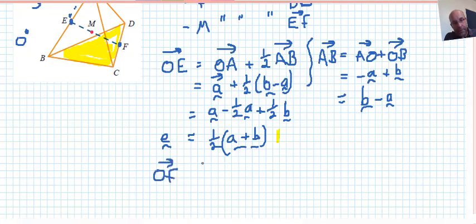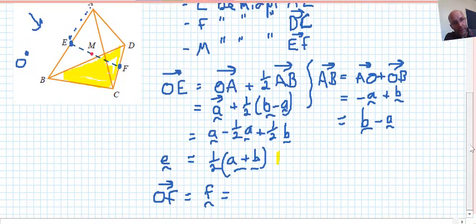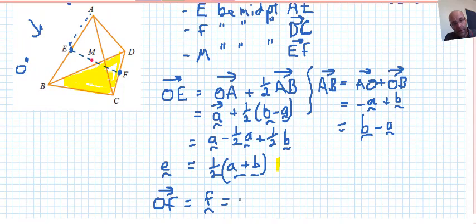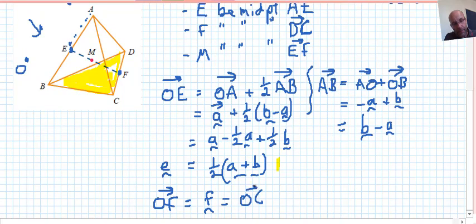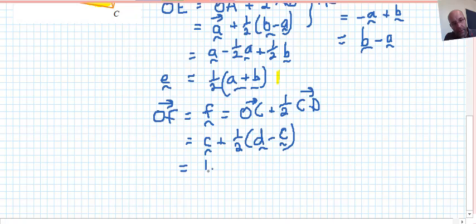For OF now, we could speed this up a bit, which I could just call F. We can see, if we look at the diagram there, we could go OC plus a half of CD, just like we did above. So similar to what we did above, you can see that in the diagram, which is C plus a half of D minus C, and we've got a half of C plus D, similar to what we had above, similar pattern.